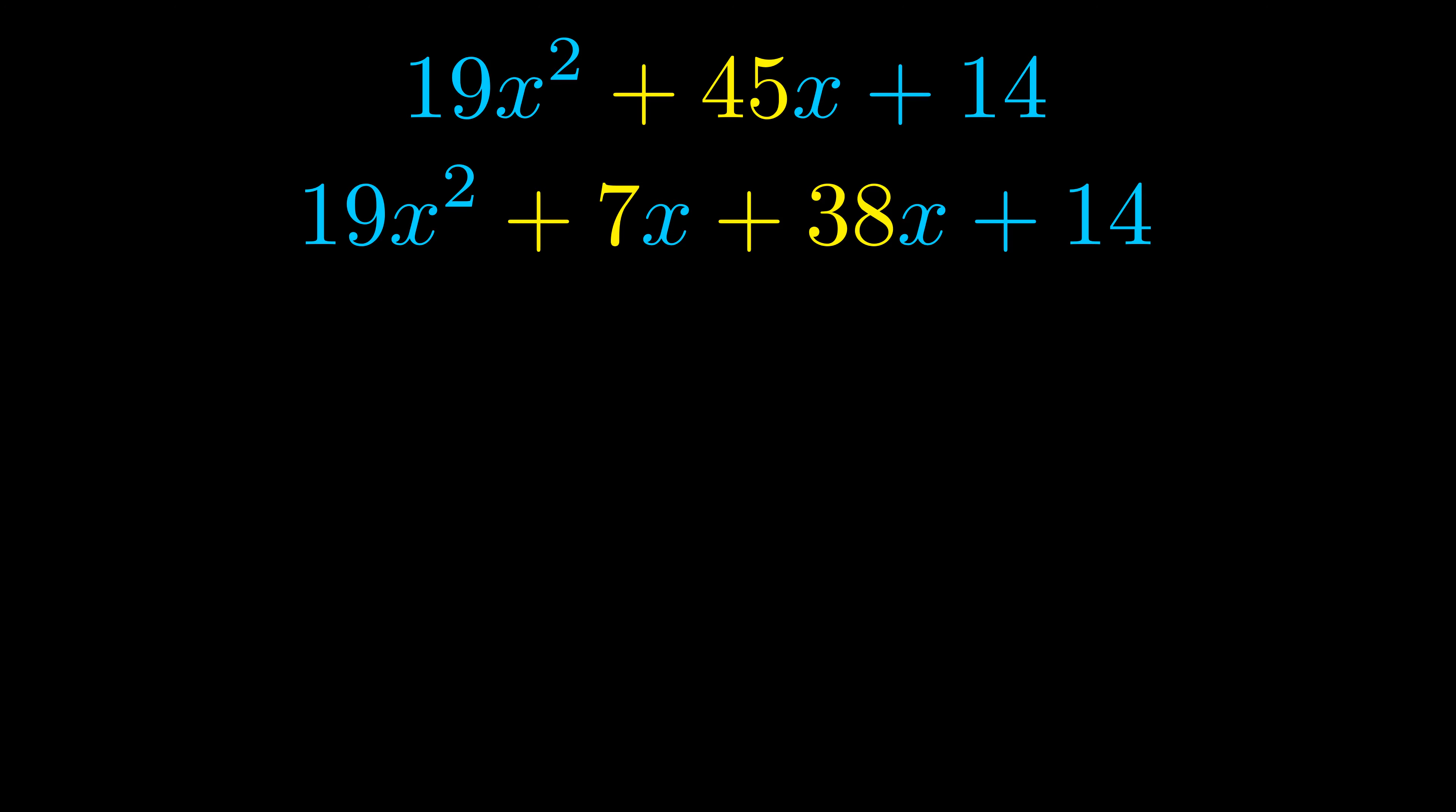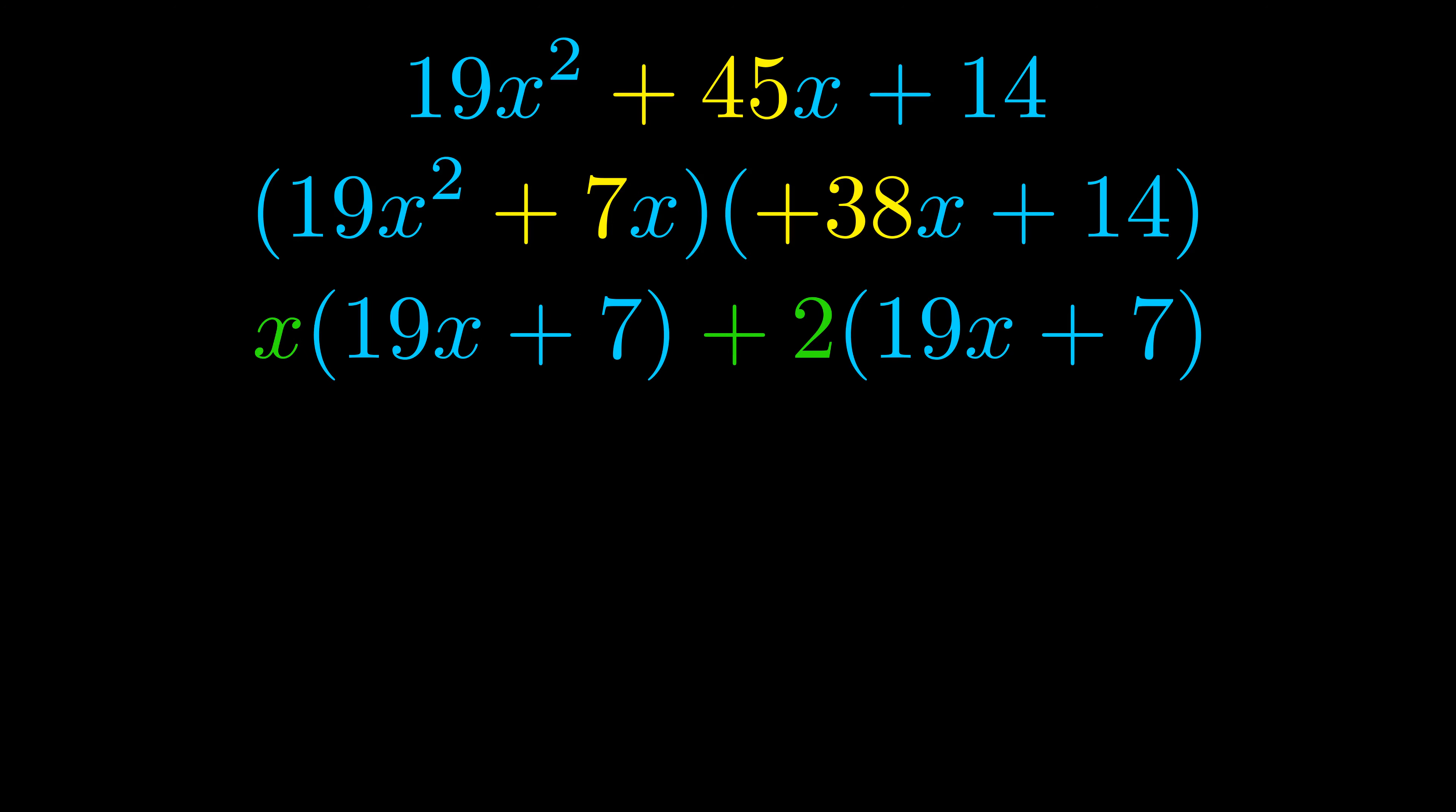Once we've done this we go ahead and we put parentheses around the first term and the last term, and we do that so that we can take the greatest common factor out of both terms. We can see the greatest common factor is now outside in green. Notice also how what remains inside of the parentheses is the same in both cases. The blue values are the same.